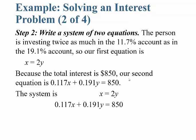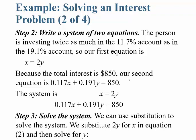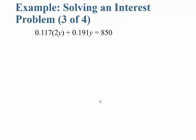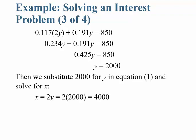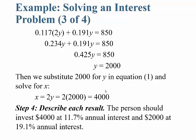Using substitution: plug 2Y in for X in the second equation. Multiplying and combining: 0.234Y + 0.191Y = 0.425Y = 850. Dividing both sides by 0.425 gives Y = $2,000. Then X = 2Y = 2(2,000) = $4,000. So the person should invest $4,000 in the 11.7% annual interest fund and $2,000 in the 19.1% annual interest fund, and you can verify these values check out.